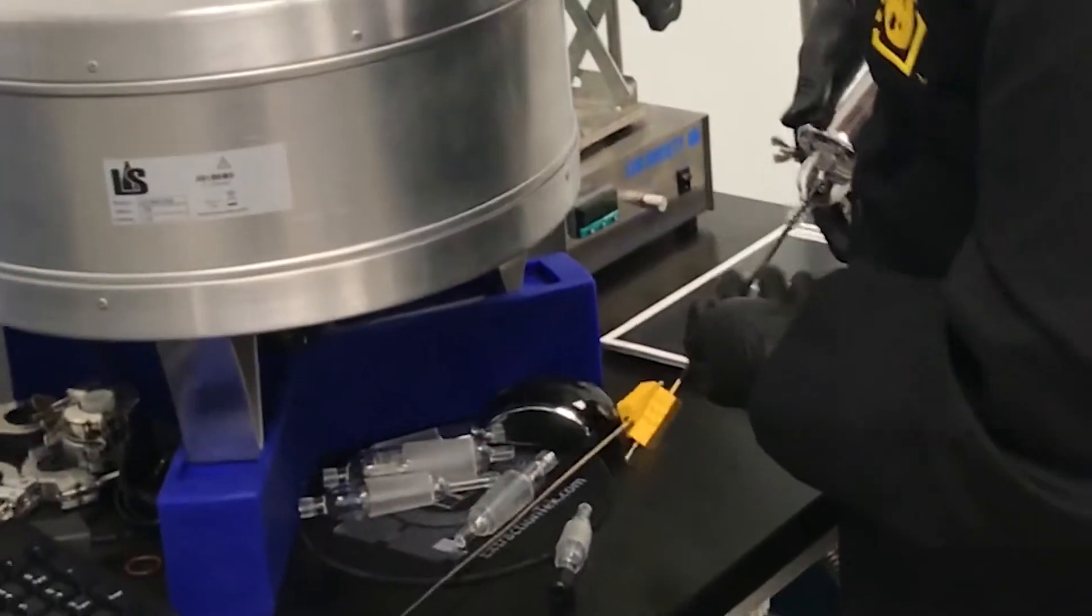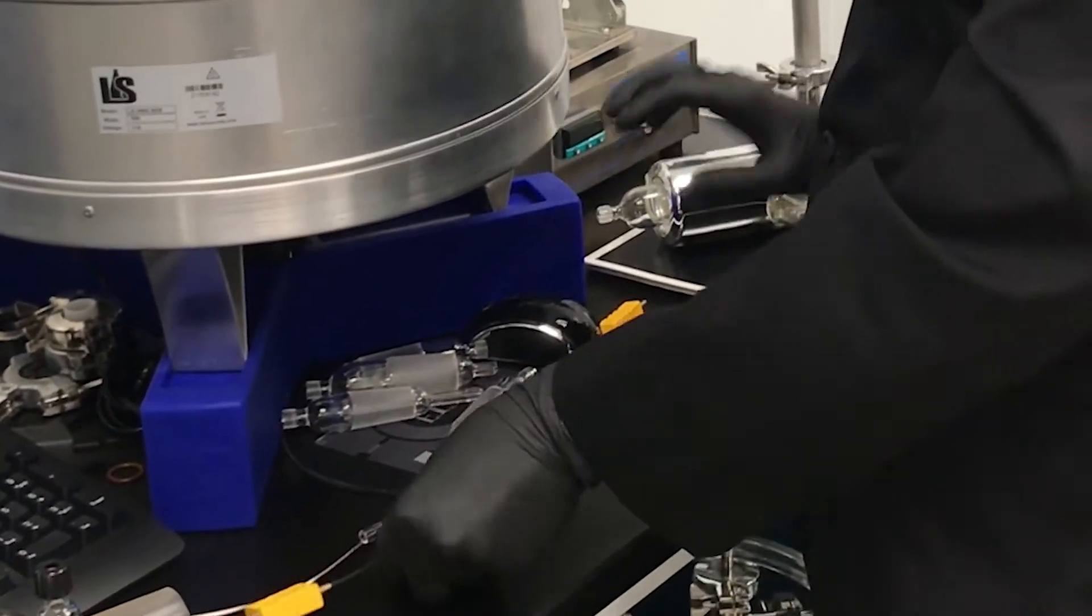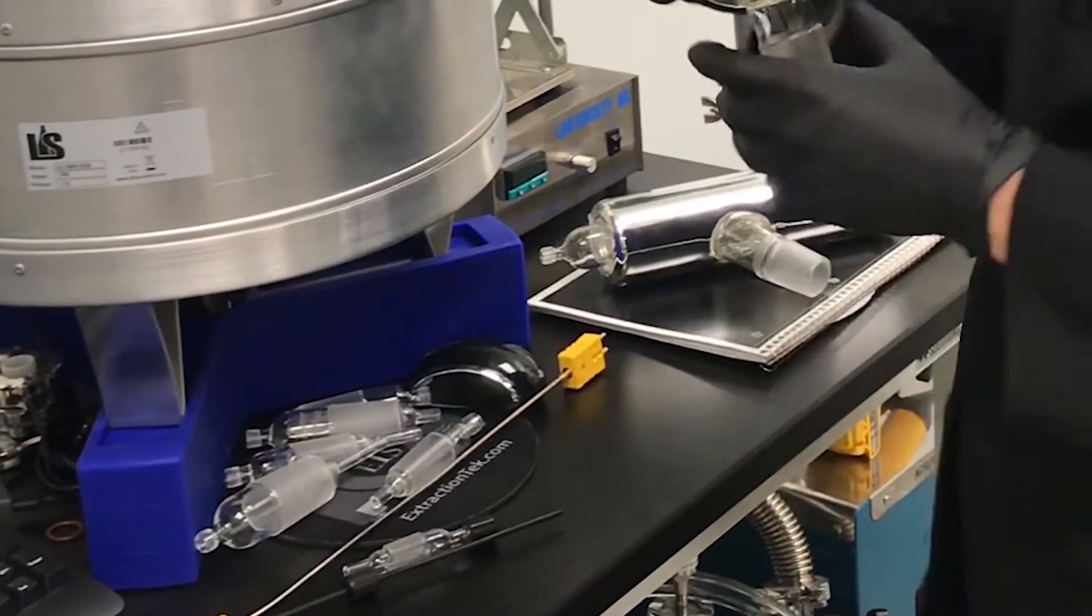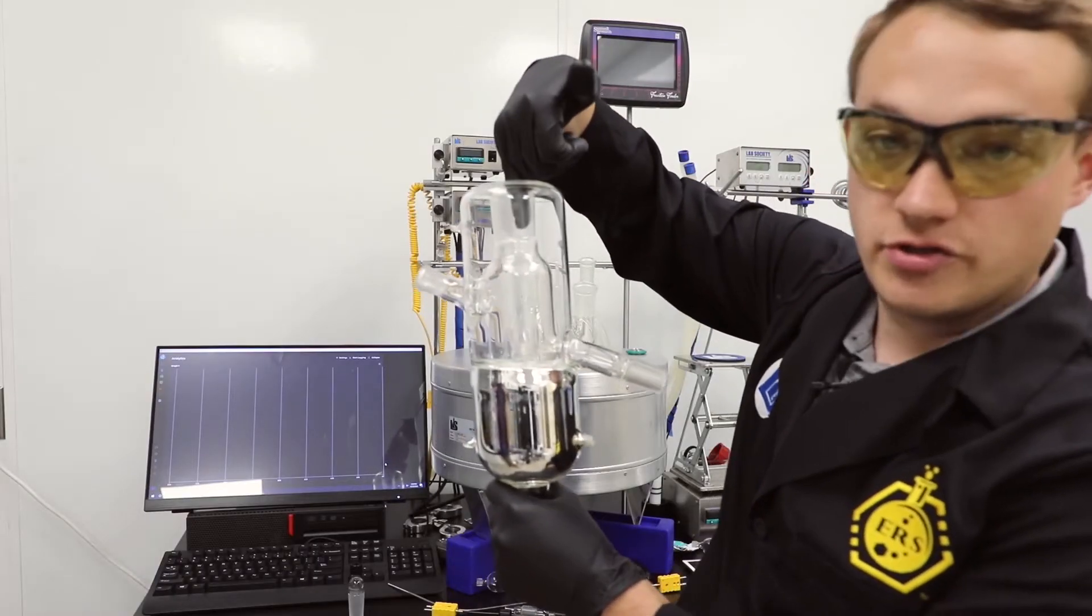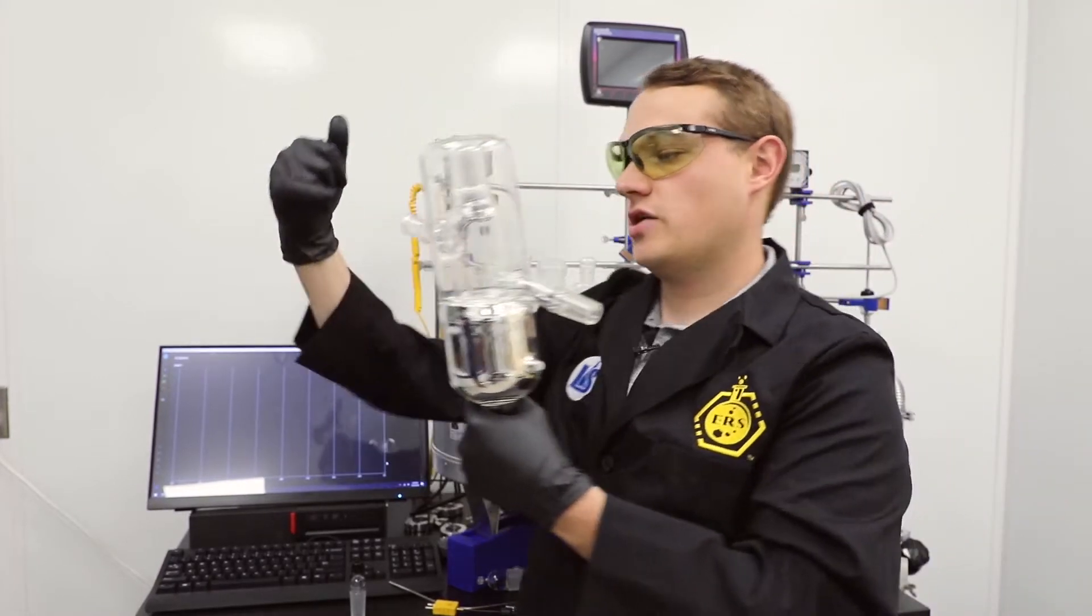We also have our high efficiency distillation heads. They're a little bit different. We're going to have two different places for thermocouple placement. We can either go in through the top of the head and measure straight on top of the tube or we can measure from the side.